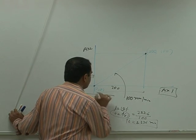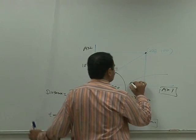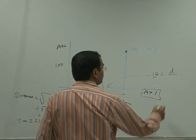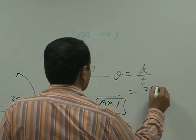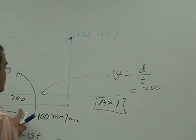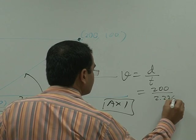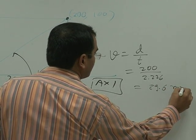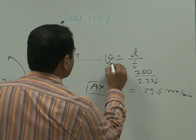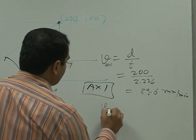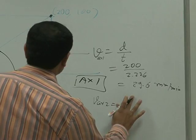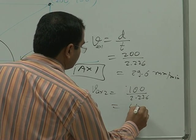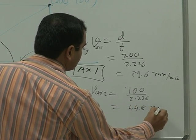Now, you have distance, 200 distance and this time, so what is the speed of this? v is equal to d by t, d is 200 for x axis, time is 2.236, so what is this value? 89.6mm per minute. What is, this is axis 1. So for axis 2, distance is 100, 2.236, so it is half of this, 44.8mm per minute.